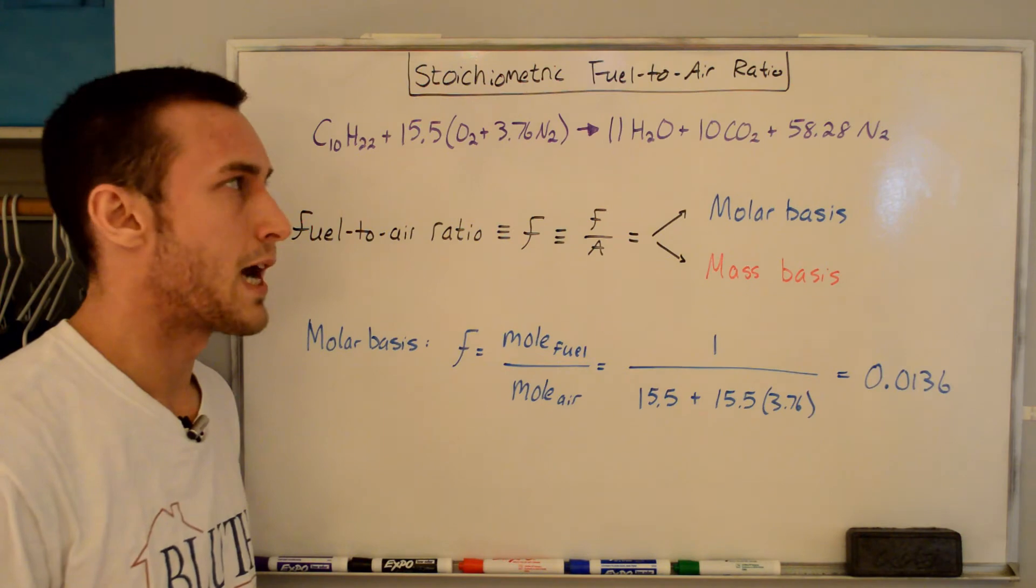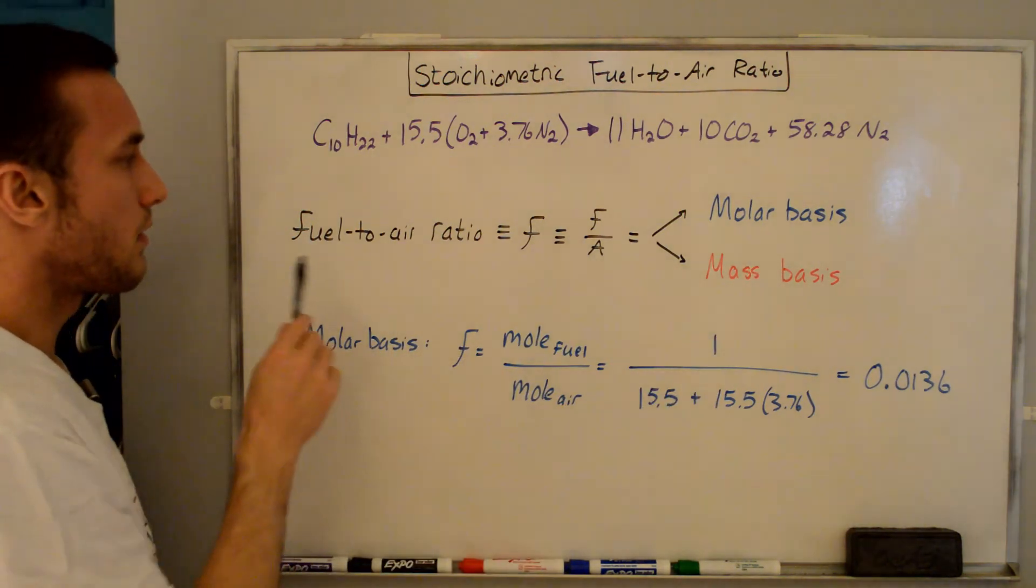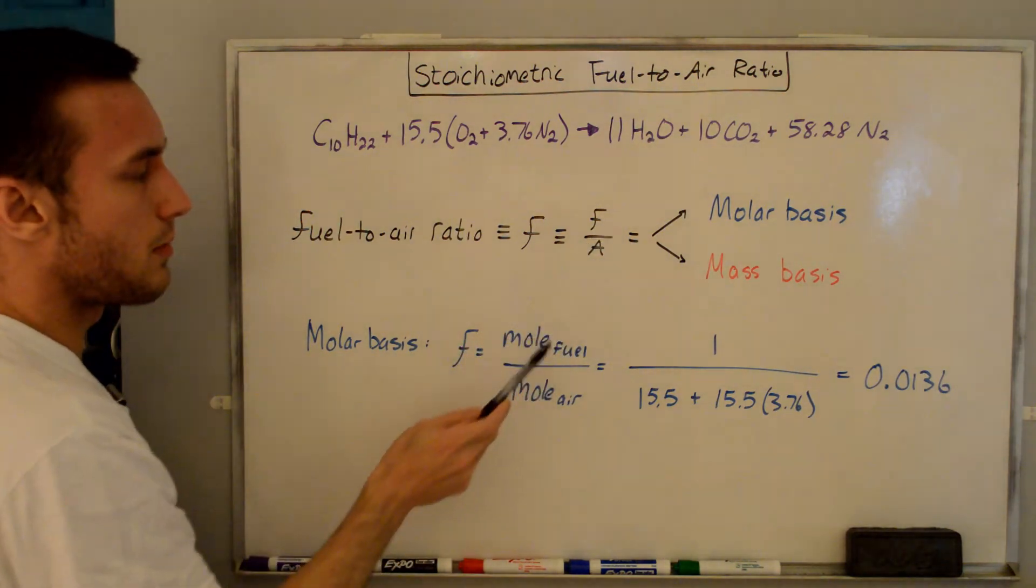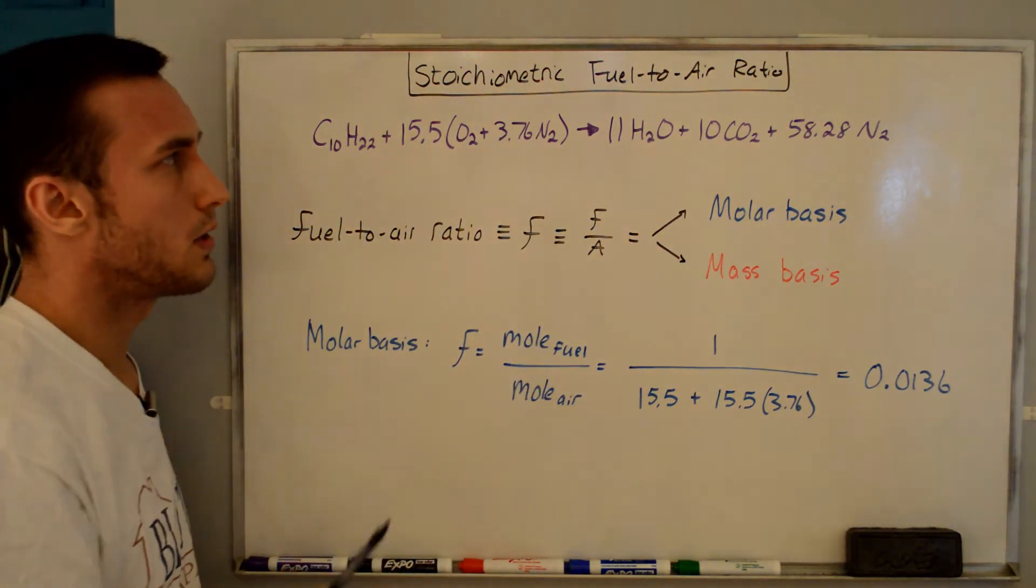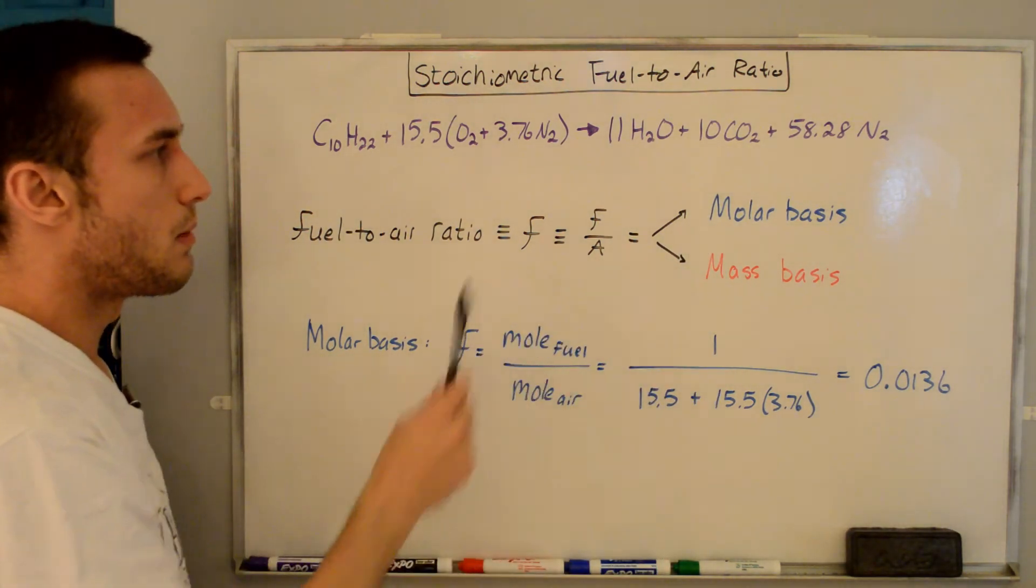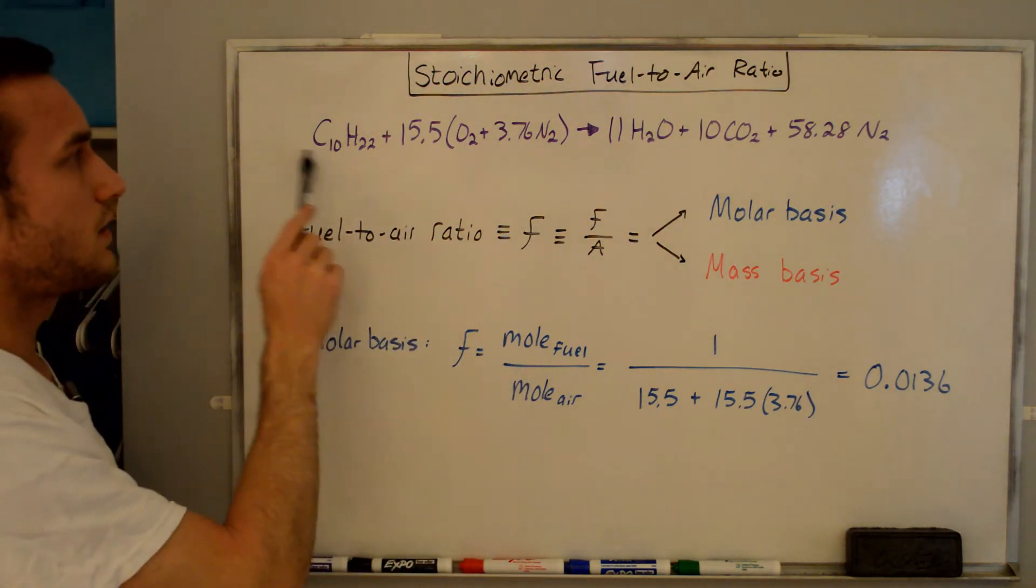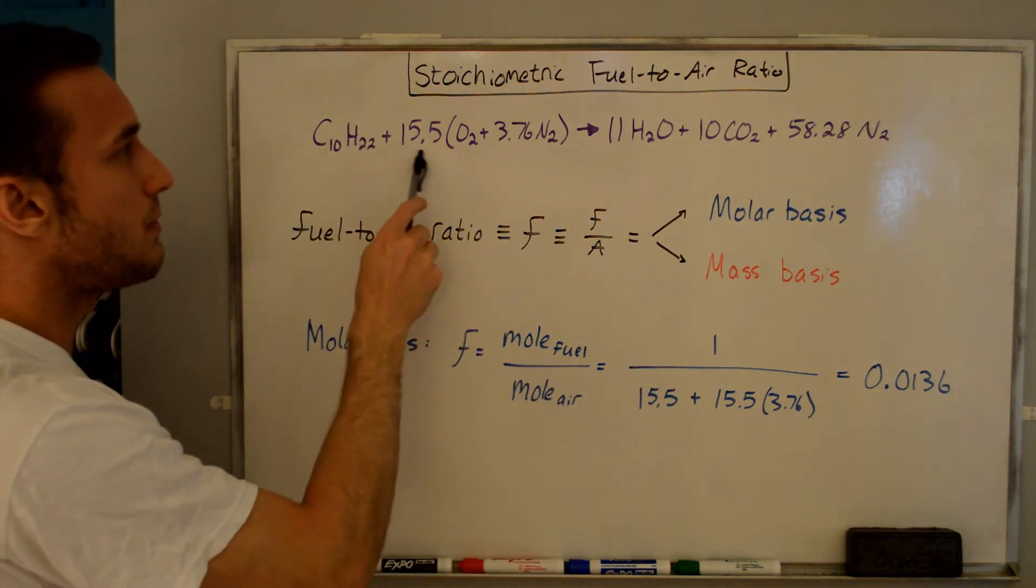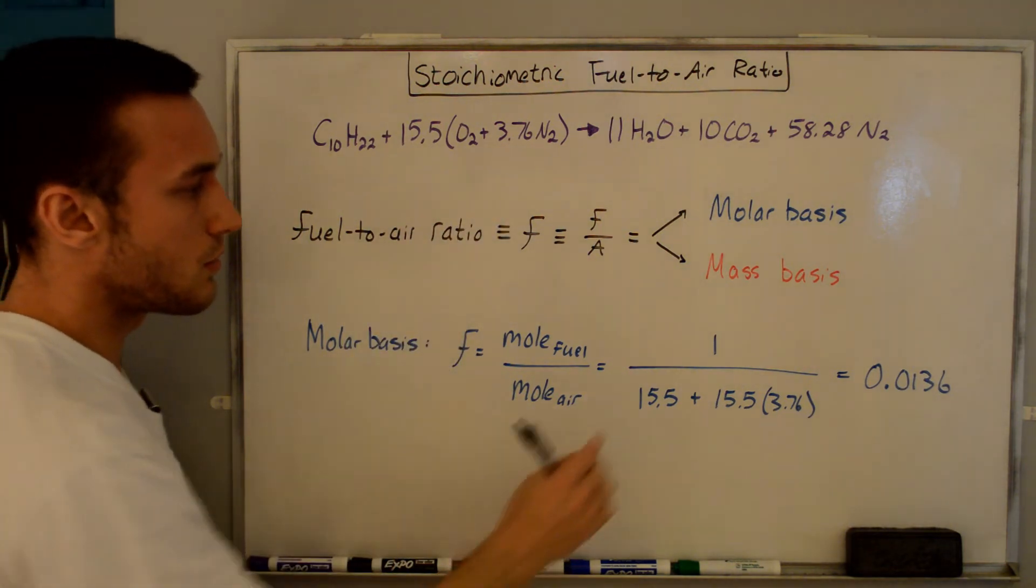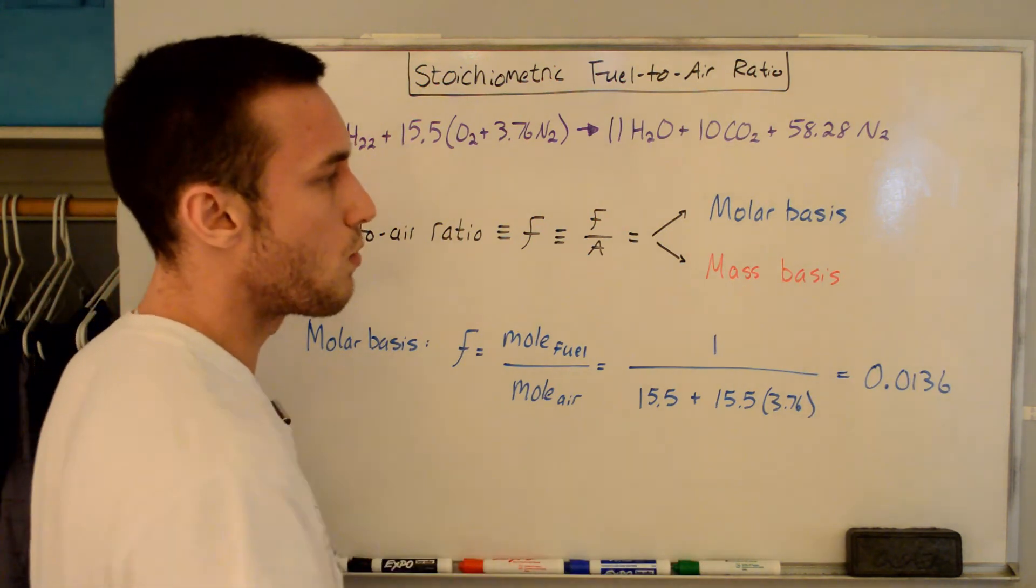So now that we have the balanced global reaction, we can go on to solve what this video is actually about, the fuel-to-air ratio. So I've rewritten the balanced equation up here. And we're going to solve for the fuel-to-air ratio, which is defined as with the letter F, lowercase F, and is the fuel over air. So you might also see it as F over A. And so there's two ways that you can define the fuel-to-air ratio. The first is on a molar basis and the second is on a mass basis. So if we just do the molar basis first, F is equal to the moles of the fuel over the moles of the air. So the moles of the fuel, there's only one C10H22. So that's one. And for the air, we have 15.5 moles of O2 and 15.5 times 3.76 moles of N2. So that's why we have that written in the denominator here. And that means that on a molar basis, our fuel-to-air ratio is 0.0136.